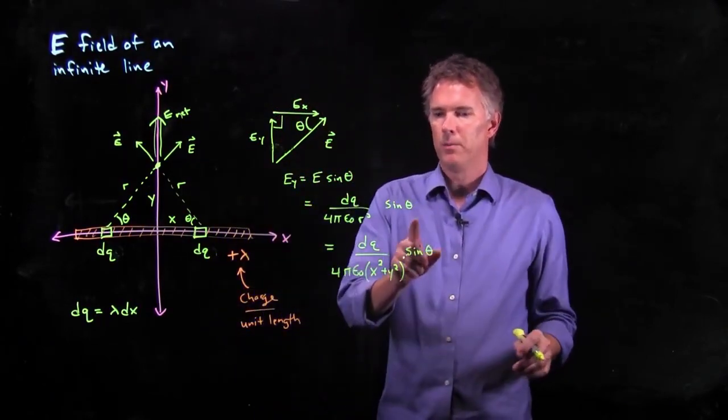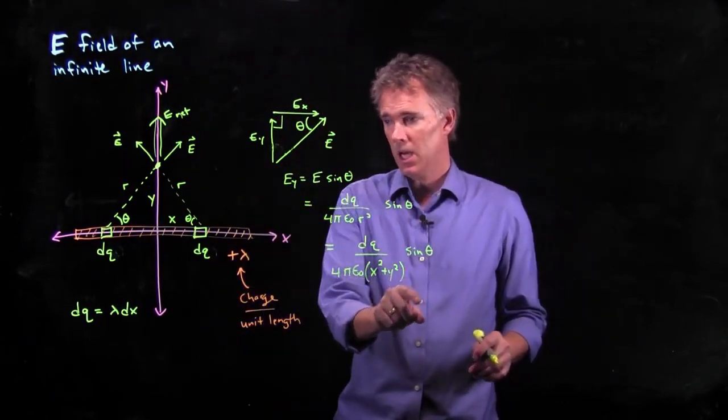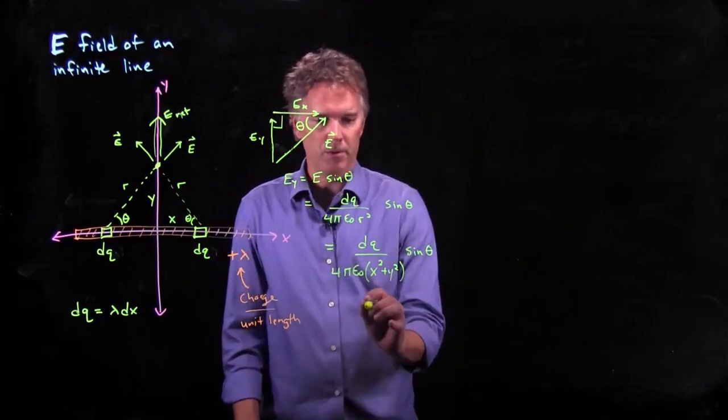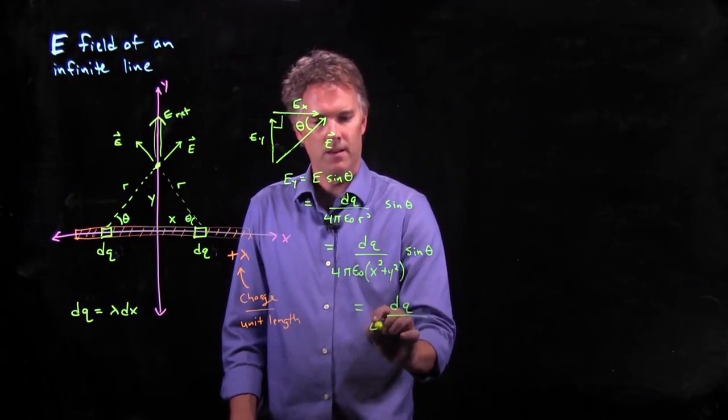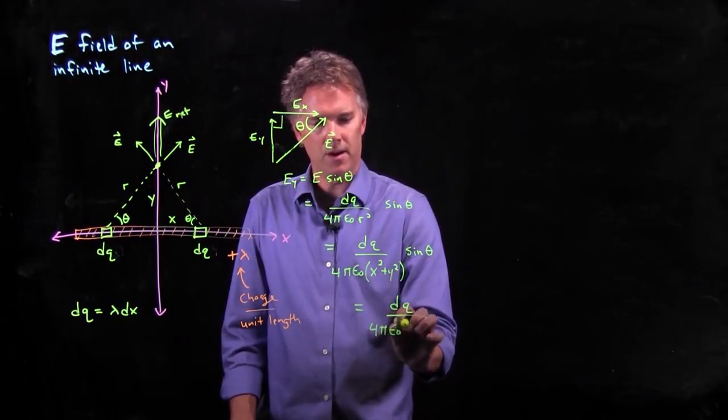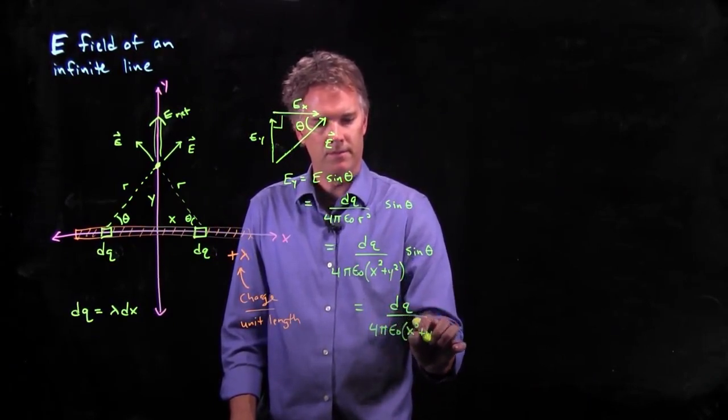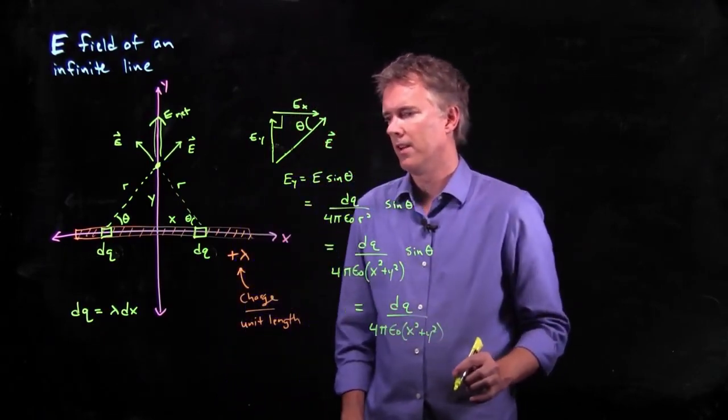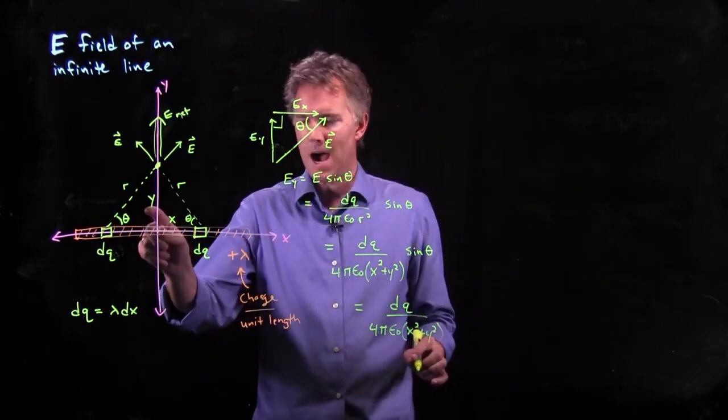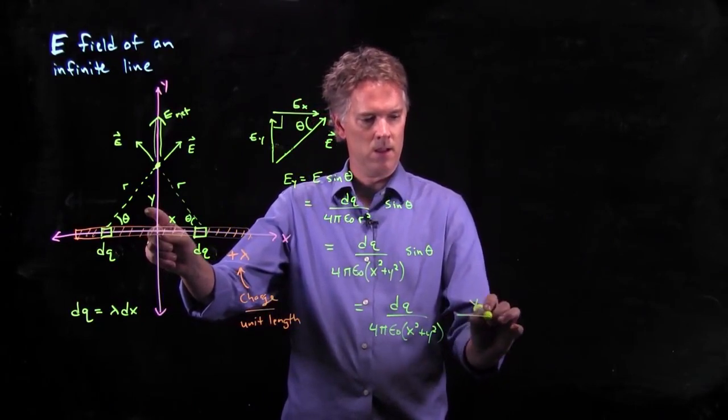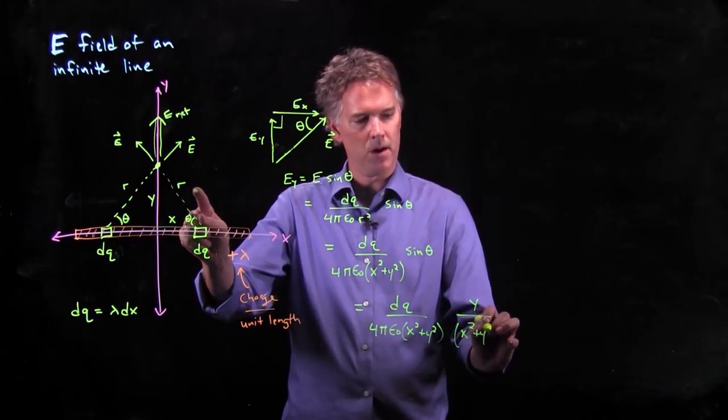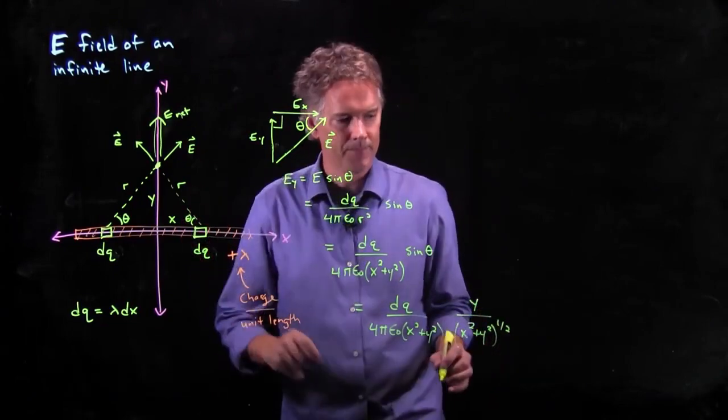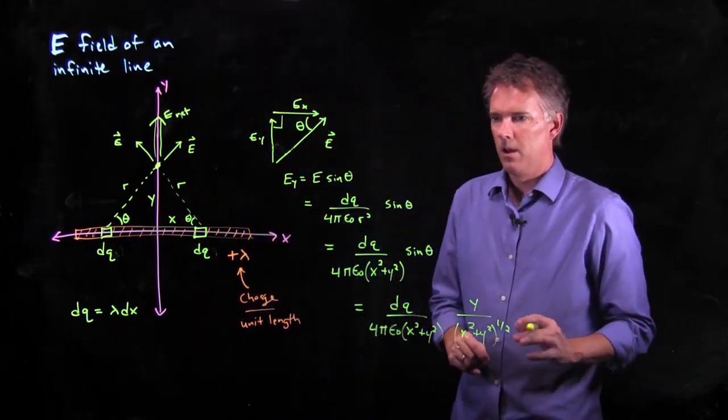We're almost there, but it would be nice to write this sin θ in terms of some of these variables, and we can certainly do that because we have those sides of the triangle. What is sin θ? It is y over r, which is x squared plus y squared to the 1 half.